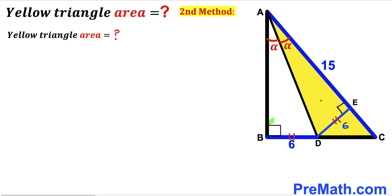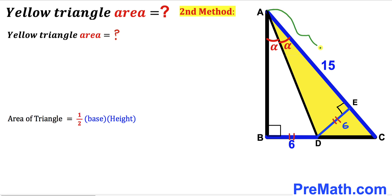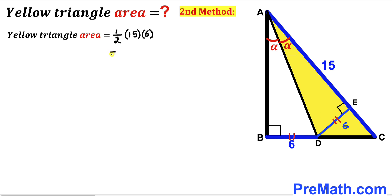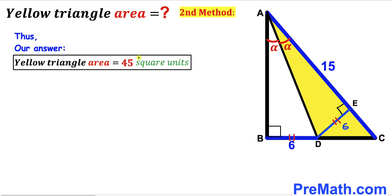Now we calculate the area of this yellow shaded triangle ACD. Recalling the area formula: area equals one half times base times height. For this yellow triangle, side AC is the base and DE is the height. So the yellow triangle area is one half times 15 times 6, which simplifies to 45 square units. The area of this yellow shaded triangle is 45 square units using the second method as well.